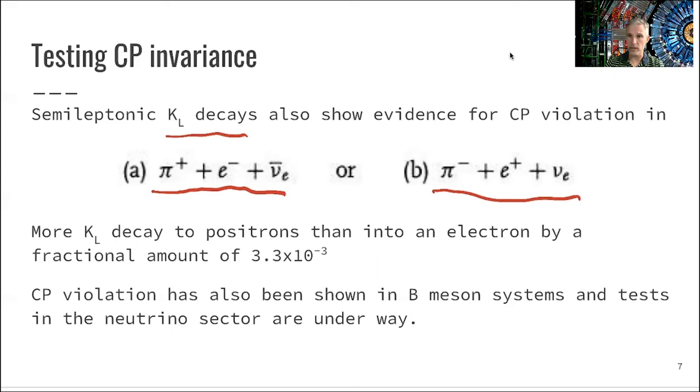It turns out, when you really count those events and perform a precise experiment, that the K-longs prefer decays to positrons over decays to electrons. The fractional amount of this imbalance is 3 times 10 to the minus 3. This is a rather small effect of CP violation in direct decays.